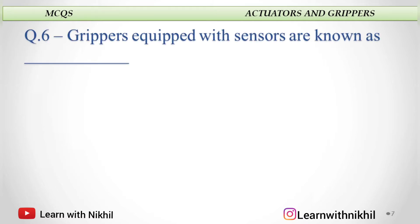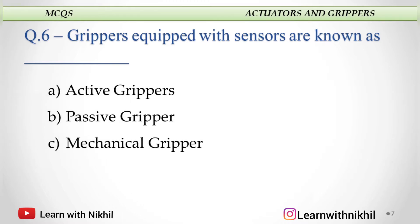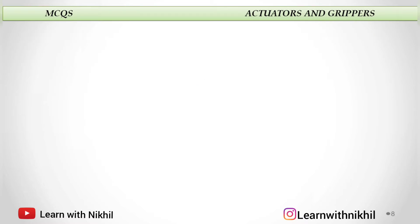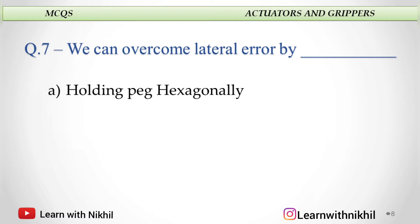Grippers equipped with sensors are known as: A. Active grippers, B. Passive grippers, C. Mechanical grippers, or D. Universal gripper? Grippers which are equipped with sensors are called active grippers.